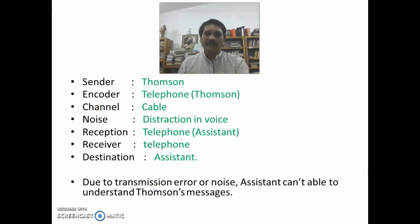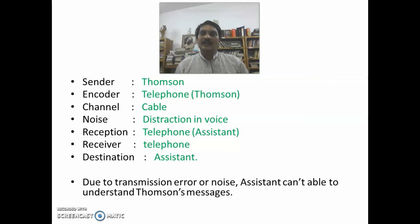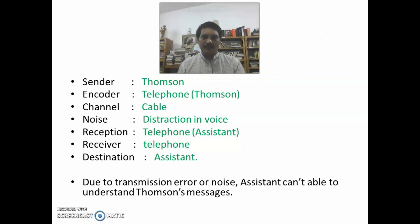In this example, the sender is Thompson, the encoder is the telephone, and the channel is the cable. The noise is the distraction in the voice. The receiver is the receiving telephone, and the destination is the assistant. Due to the transmission error, the assistant could not understand Thompson's message correctly.